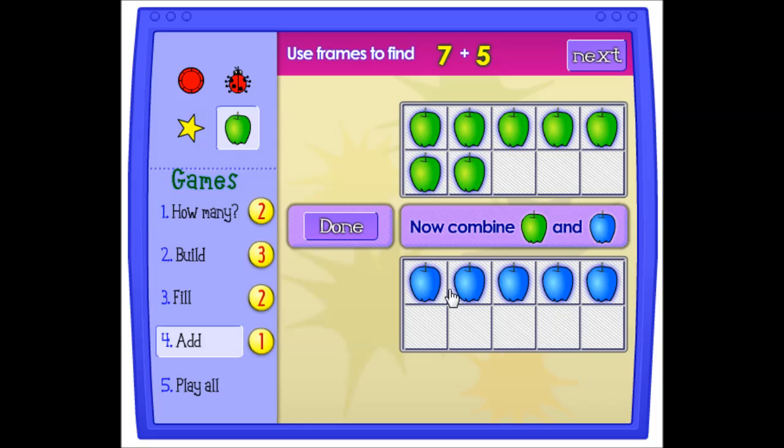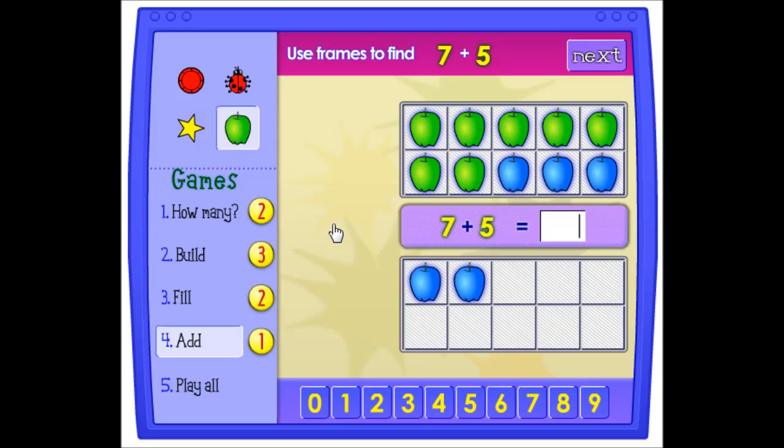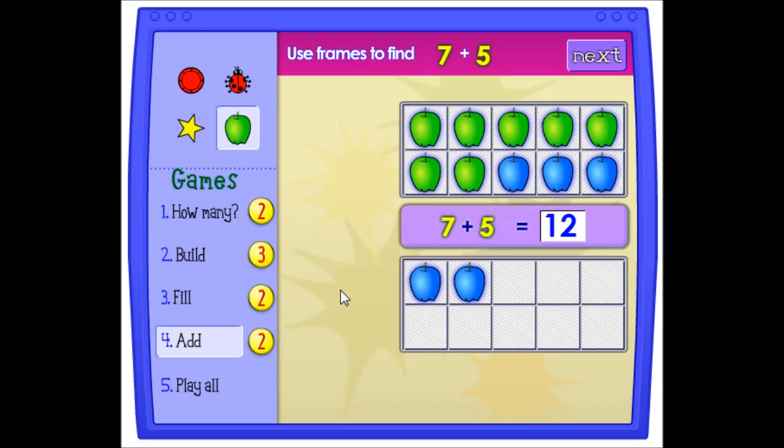Now combine the apples. Move the blue ones up to fill the frame of green. Just for consistency, I'll move these over. And you can just type it in. Seven plus five equals twelve.